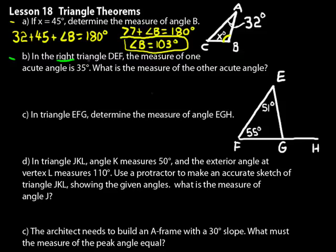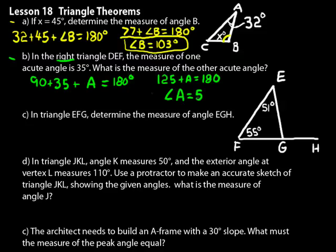And anytime you're given a problem like this where they want you to find the measure of an angle and you're dealing with triangles, just think, well, I've got to know two of the three. So I have a 90 degree. I have a 35 degree. And I'll just call the other one A for angle A. We know that has to add up to 180 degrees. So we have 125 plus A is equal to 180. And we subtract 125 from both sides. Angle A is equal to 55 degrees.